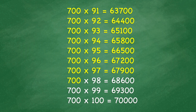700 times 98 equals 68,600. 700 times 99 equals 69,300. 700 times 100 equals 70,000.